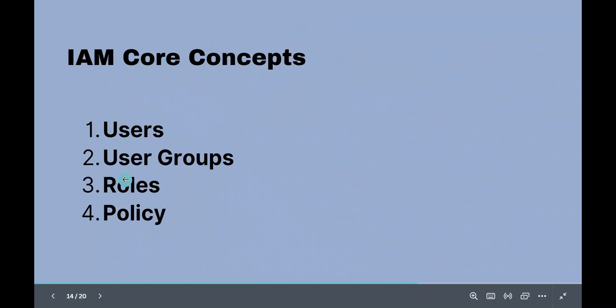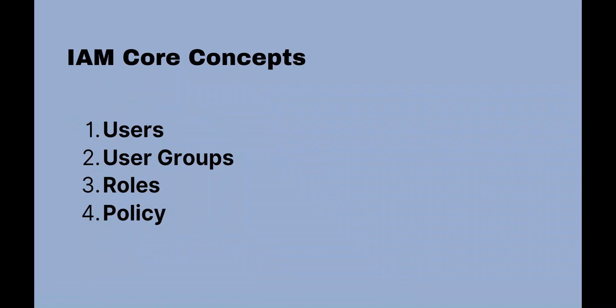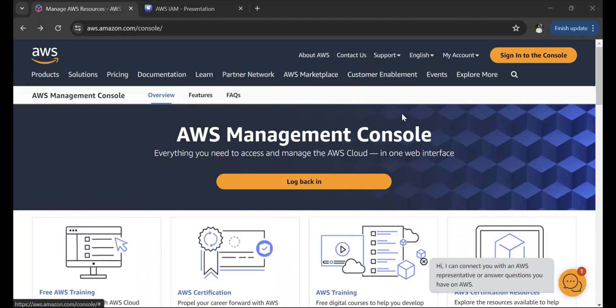So I hope you understood the four core concepts of IAM: users, user groups, roles, and policies. Once you have a strong understanding of these concepts, you will be in a better position to work with IAM and create resources using it. That's the theory part — now let's actually try to understand in practice how IAM works and how to create users, roles, policies, and so on. Let's log into the AWS management console to work with IAM.